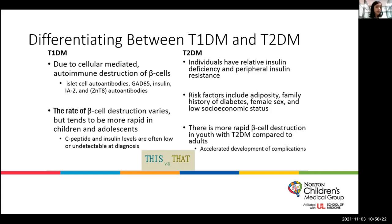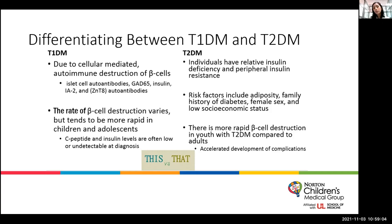In type 2 diabetes, as opposed to absolute insulin deficiency, we see relative insulin deficiency, and oftentimes peripheral insulin resistance as well. Risk factors for type 2 diabetes include adiposity, family history of diabetes, female sex, and low socioeconomic status. Interestingly, in youth with type 2 diabetes compared to their adult counterparts, there is much more rapid beta cell destruction, and they are often at risk for accelerated development of long-term microvascular and even macrovascular complications.